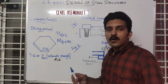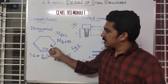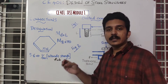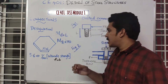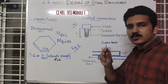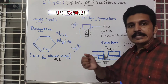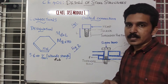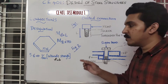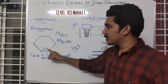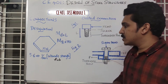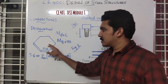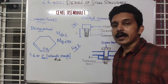The grade of a bolt signifies its strength — that is, the ultimate strength and the yield strength. A bolt is a steel member, so it has two types of strength: yield strength, which is when it starts yielding, and ultimate strength, which is the maximum point before failure. For a bolt graded 5.6, the grade equals 1/100th of the ultimate strength FUB. So FUB = 100 × 5 = 500 MPa.